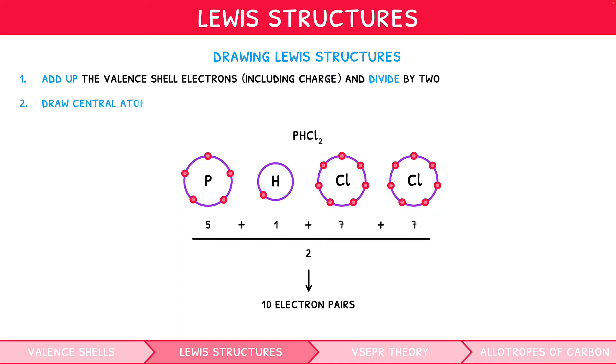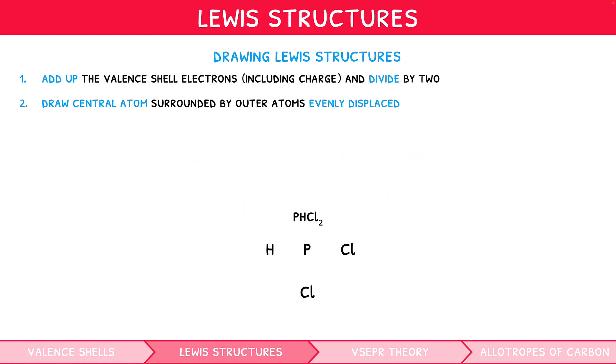First, draw the central atom surrounded by the 3 outer atoms, evenly displaced. Here, draw 90 degrees apart from one another. Then, join each of the outer atoms to this central atom using one line, representing one bond.